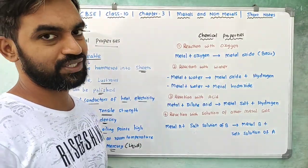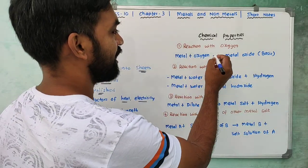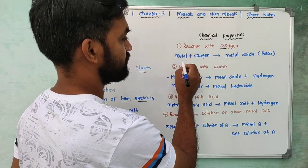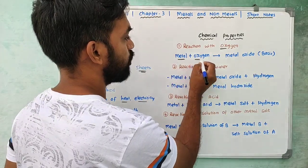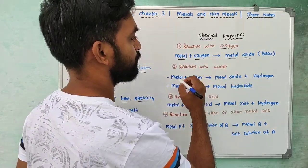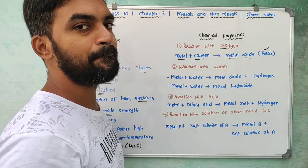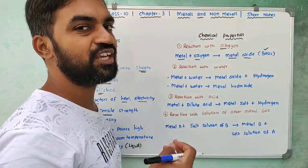Now, the chemical properties of metals. First, reaction with oxygen: metal plus oxygen produces metal oxides. Metal oxides are basic in nature, with pH more than 7.